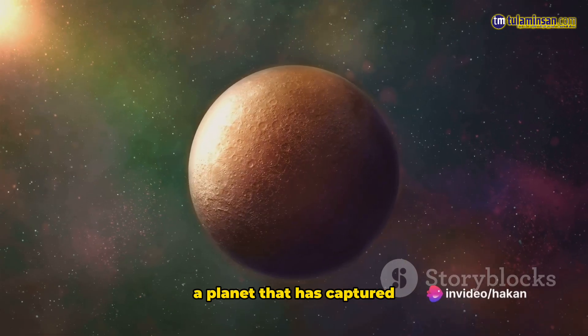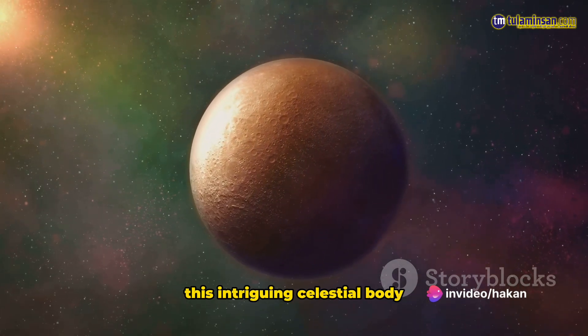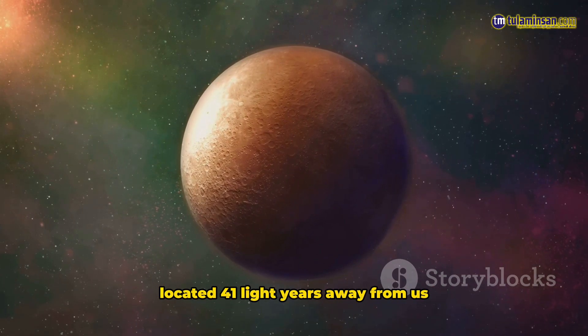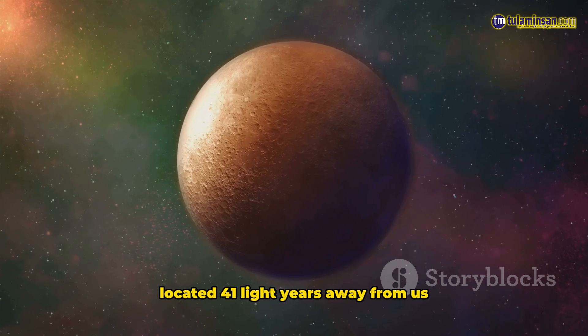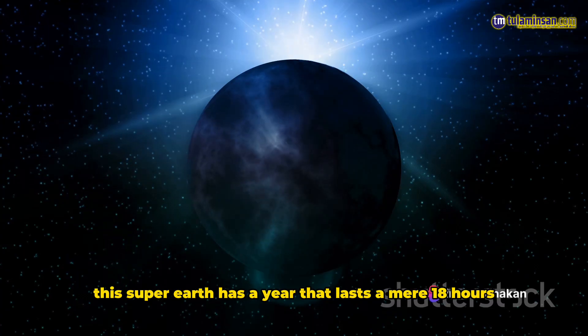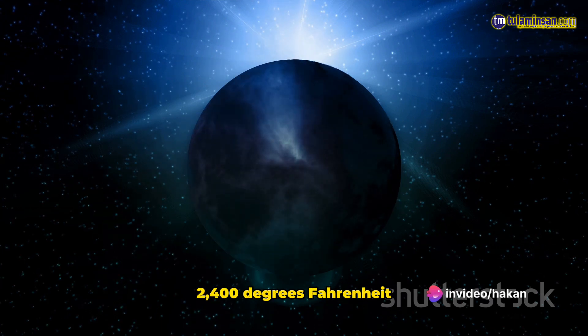Let me introduce you to 55 Cancri e, a planet that has captured the interest of astronomers worldwide. This intriguing celestial body, also known as Janssen, is believed to contain a vast amount of diamonds. Located 41 light-years away from us, this super-Earth has a year that lasts a mere 18 hours and boasts temperatures that can reach up to 2,400 degrees Fahrenheit.